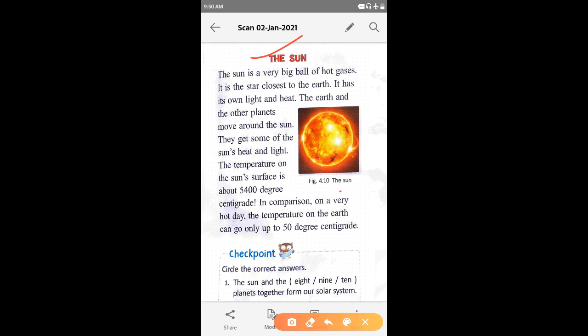Aur ve sun se kuch heat aur light, I mean sun se unhe heat aur light milta hai. The temperature on the sun's surface is about 5,400 degree centigrade. Sun ka jo surface hai, us ka temperature hai 5,400 degree centigrade.